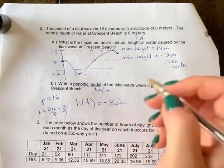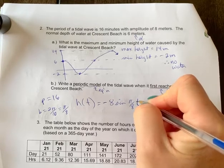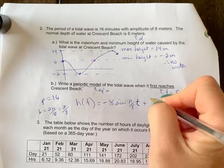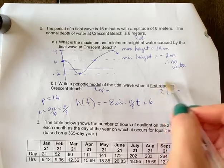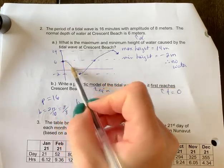So negative 8 sine pi by 8, and then T instead of X, and then my median is plus 6. There's no horizontal shift because it's where it first reaches. It's negative sine because you start it here and it goes down.